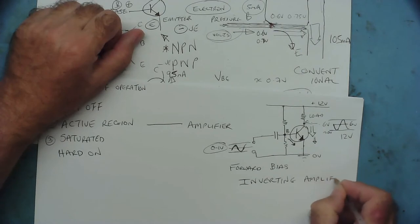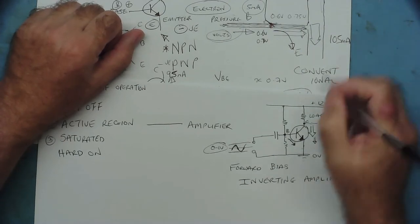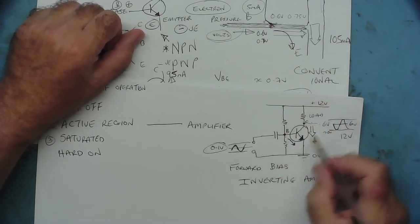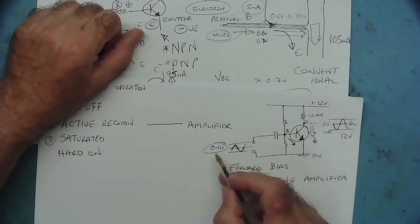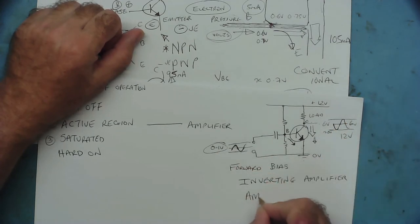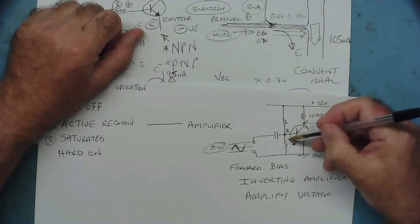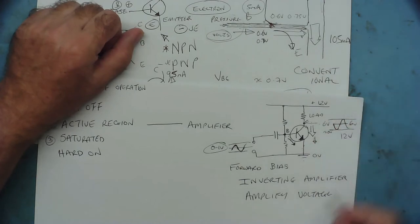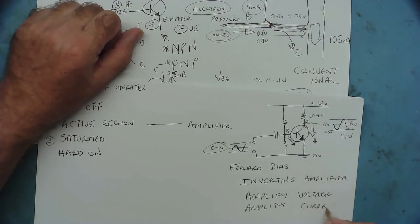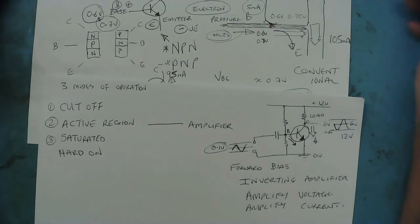That is an inverting amplifier. The transistor is amplifying the voltage, because the voltage of the output waveform is bigger than the input. It also amplifies the current, because the current flowing into the base is much less than the current flowing from collector to emitter. So it amplifies both current and voltage - that is a simple transistor amplifier, an inverting amplifier.